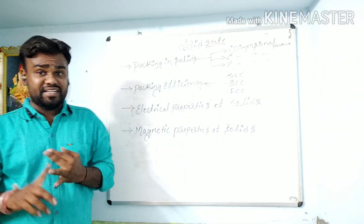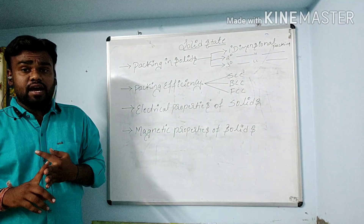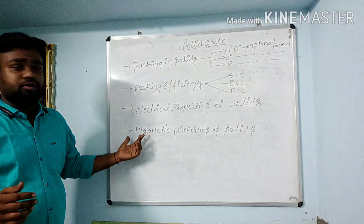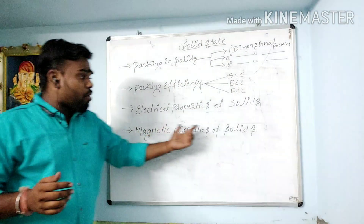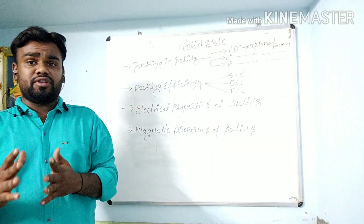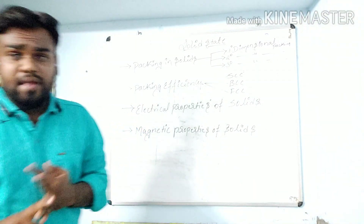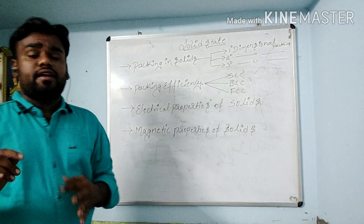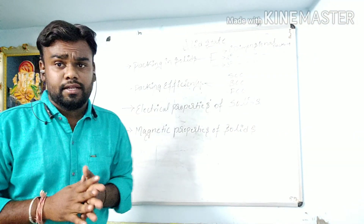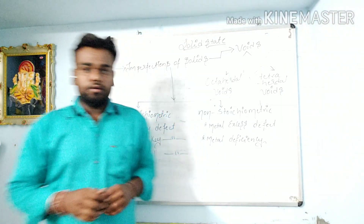Next we discuss the electrical properties of solids: insulators, conductors, and semi-conductors. Then we discuss the magnetic properties of solids — paramagnetic, diamagnetic, ferromagnetic, and anti-ferromagnetic.